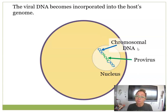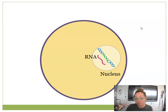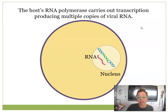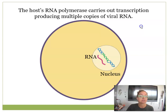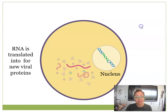Here we are now in the nucleus, where there is DNA with directions for making viral proteins. The host cell's RNA polymerase will transcribe viral RNA, which carries the genes to make new viral proteins such as capsid proteins, reverse transcriptase, and glycoproteins.